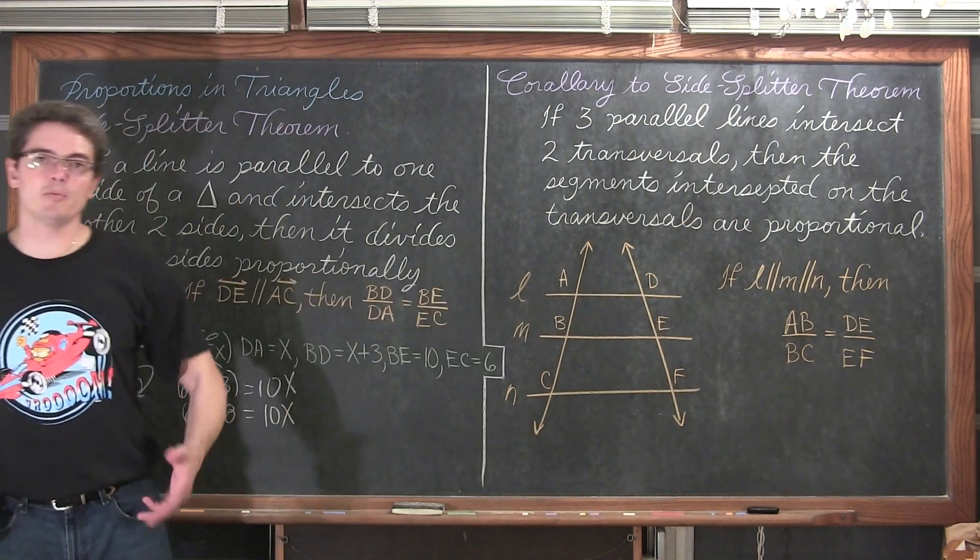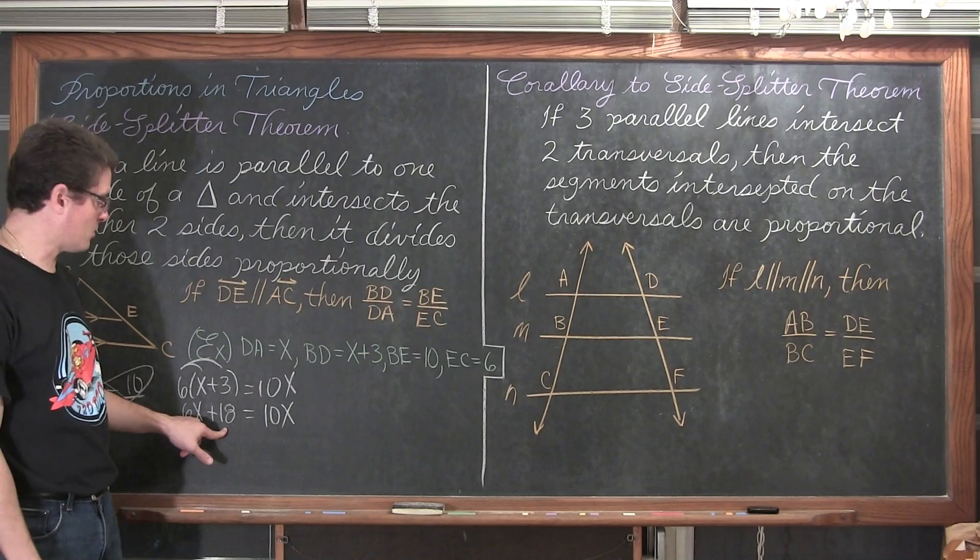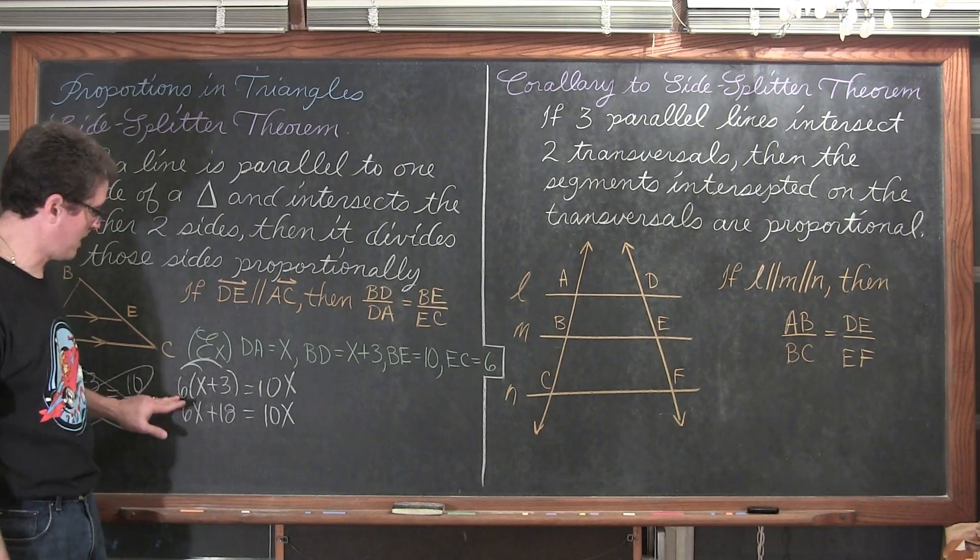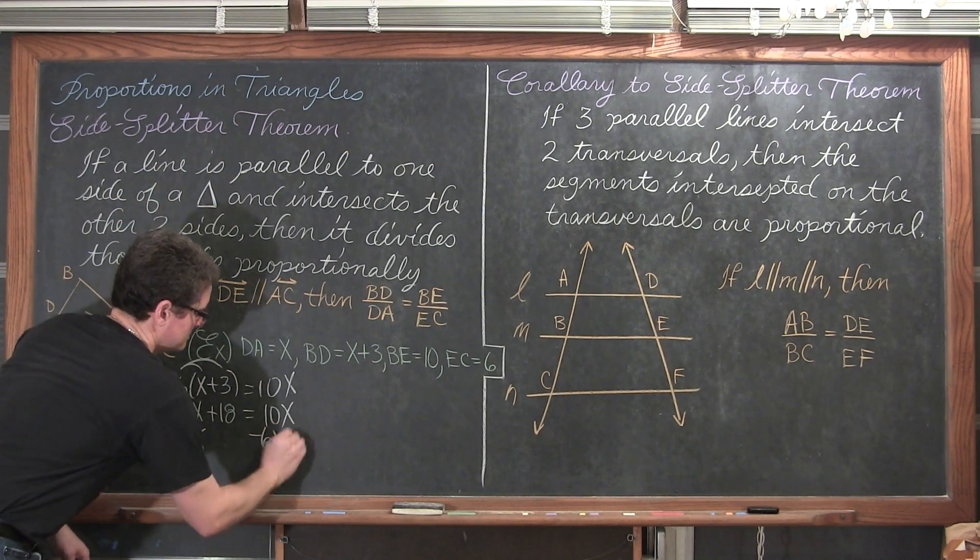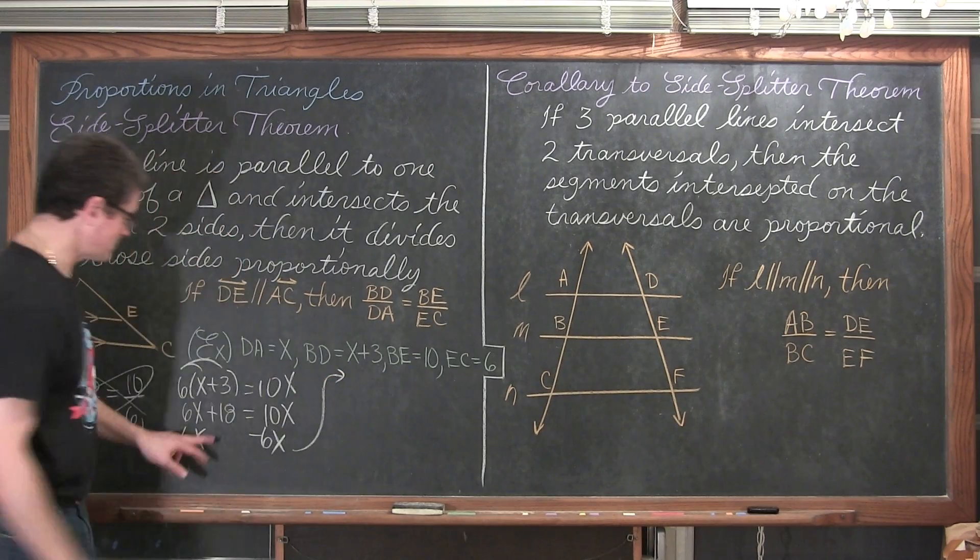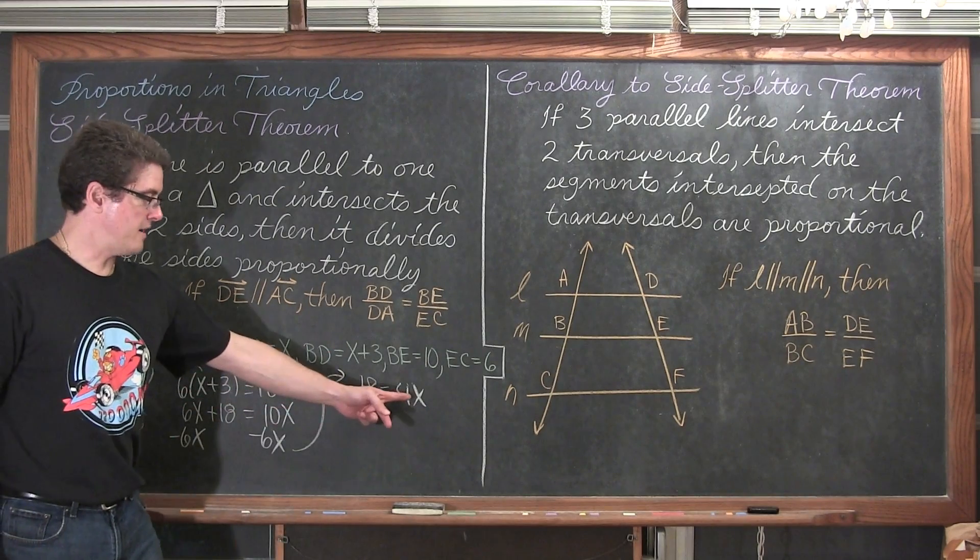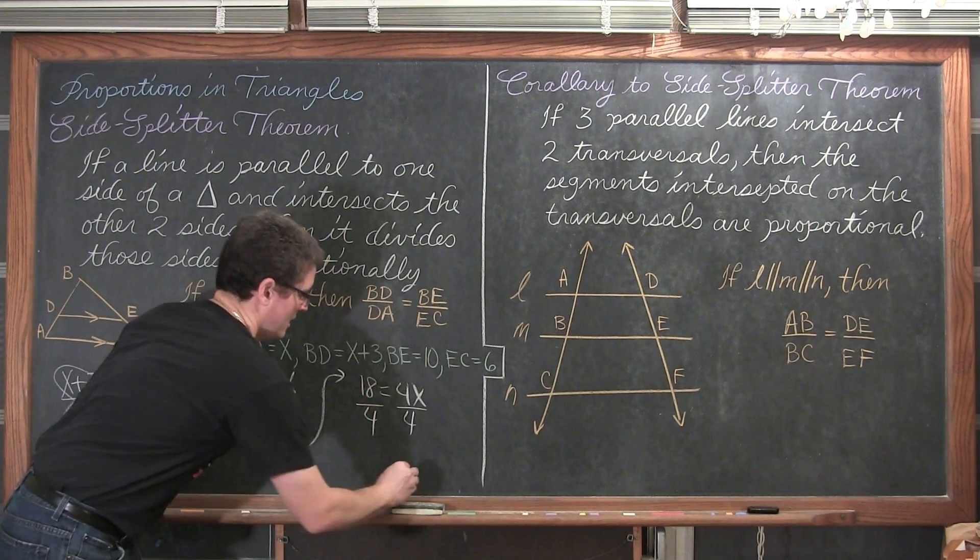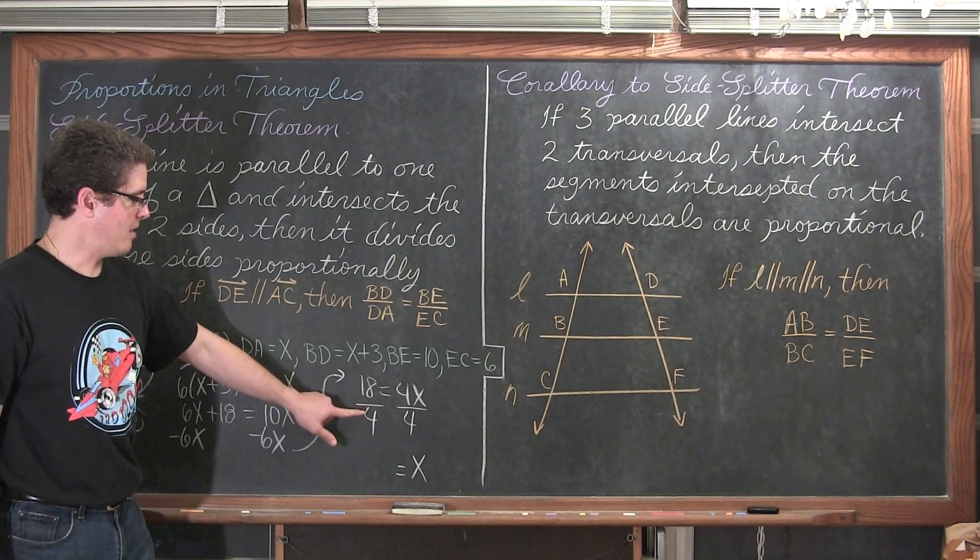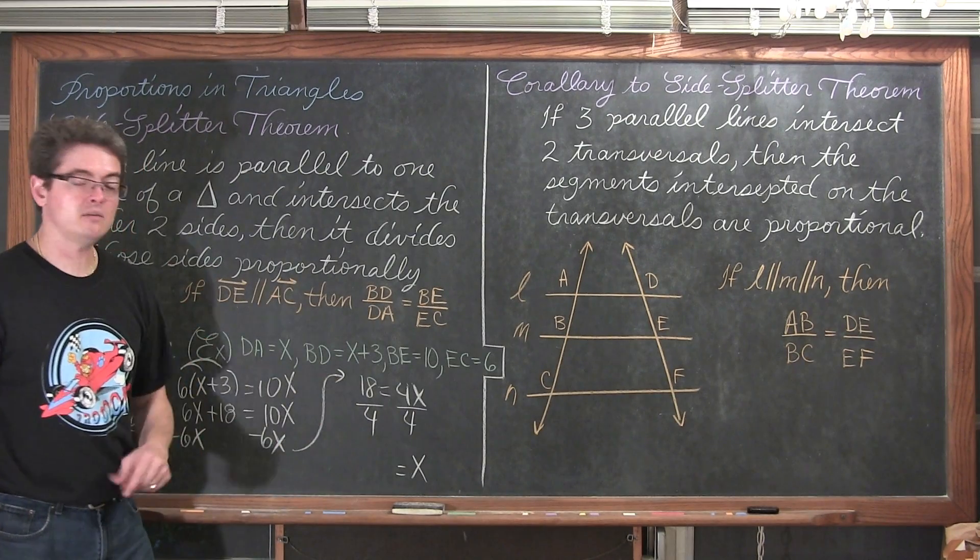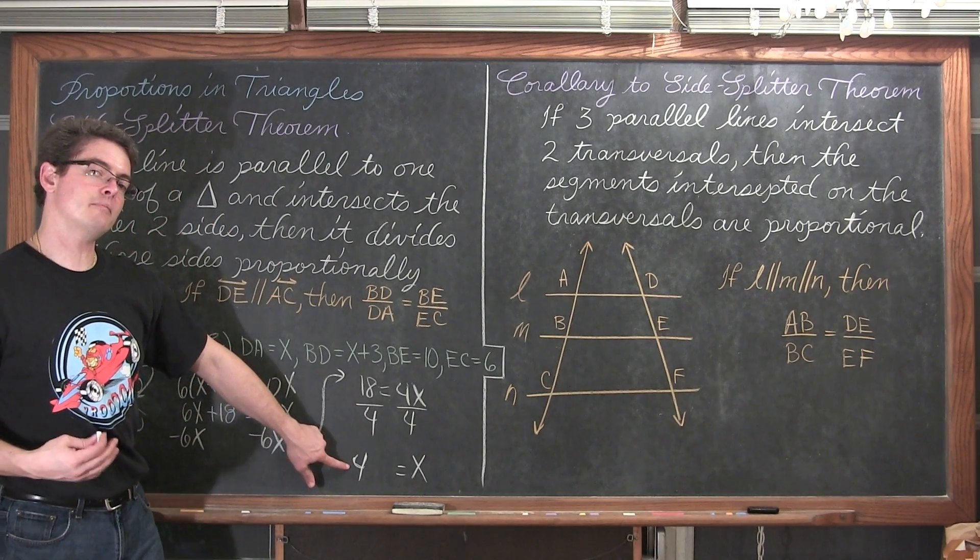We can't solve for an equation when it has parenthesis in it usually. So, I am going to take that 6 and multiply it through the parenthesis. 6 times x is 6x. We have 6 times 3 which is 18. And that is equal to 10x. If you are trying to solve for a variable, of course, you eventually at some point need to get all the variables on the same side. I have a constant of 18 over here on the left already. So, I am going to leave that there and just move the positive 6x from the left side of the equation over to the right side.